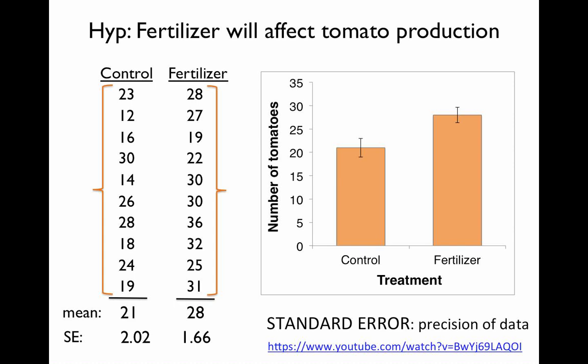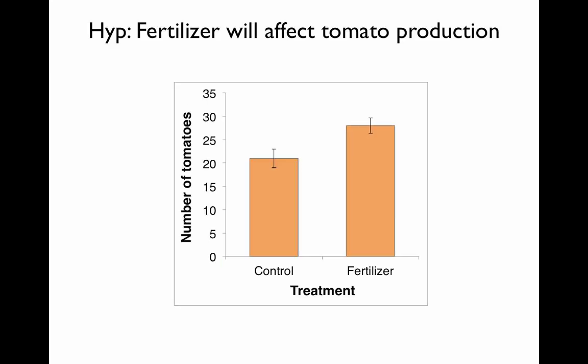Scientists often report their p-values in the text of the results section, but they can also use notation on figures to indicate whether treatments are significantly different. To indicate that our p-value is less than 0.05 and that the difference between our treatments was significant, we can add a star to this graph. Adding a star between the two bars indicates that the difference between those two treatments was significant, or p less than 0.05, so anyone can look at the graph and determine whether a hypothesis was supported.